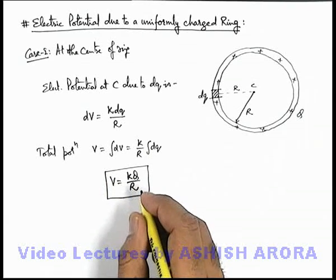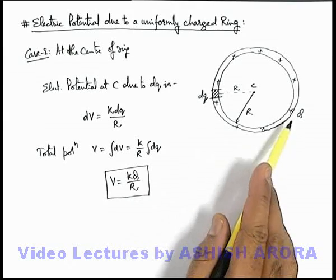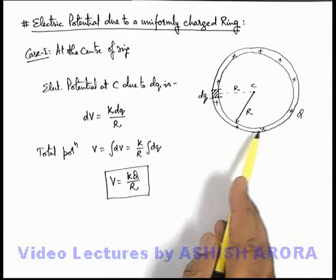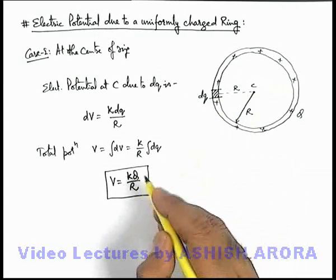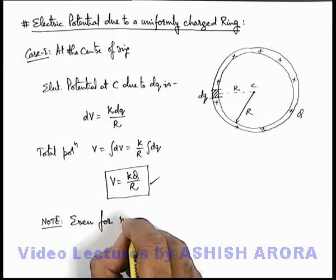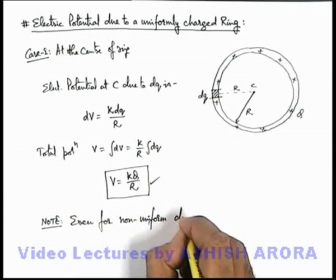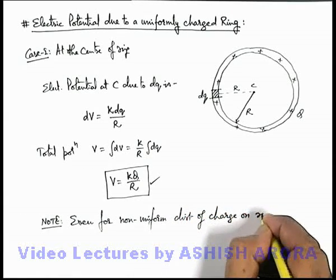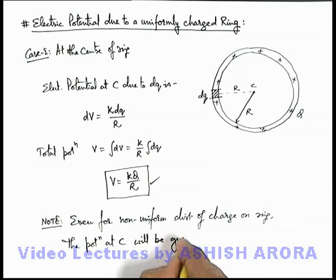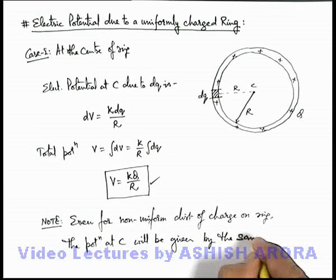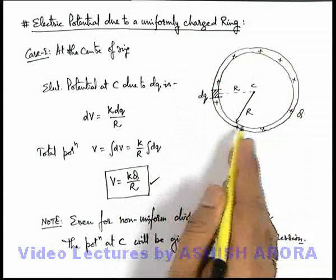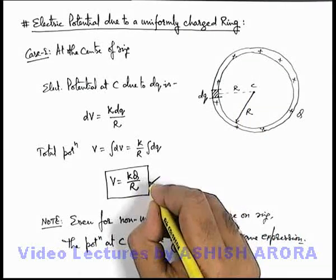This is a quite useful result for different applications. Keep in mind that even if the charge is not uniformly distributed — if it is non-uniform on the ring — all elements on the ring will still be located at distance r from the center, so the result remains the same. Even for a non-uniform distribution of charge on the ring, the potential at C will be given by the same expression kq/r, because potential is a scalar quantity and all contributions simply add up.